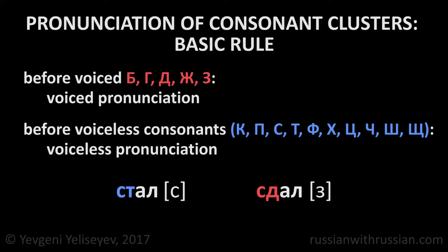Compare, for example: стал, сдал. In both situations, we write the letter S. But in the first case, it's located before a voiceless sound Т, that's why it specifies the voiceless sound С — стал. In the second word, the letter С is followed by the voiced sound Д, that's why it changes its pronunciation and specifies the voiced sound З — сдал.